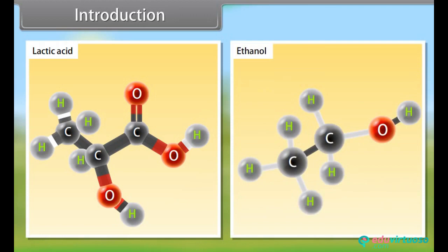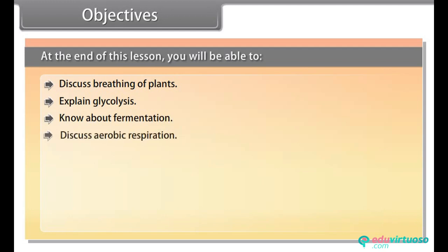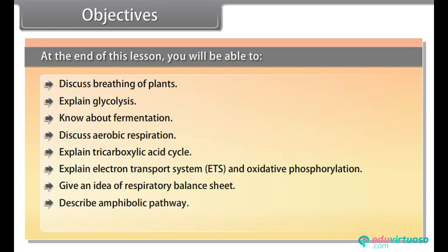Throughout this module, we learn respiration in plants. At the end of this lesson, you will be able to: discuss breathing of plants, explain glycolysis, know about fermentation, discuss aerobic respiration, explain tricarboxylic acid cycle, explain electron transport system (ETS) and oxidative phosphorylation, give an idea of respiratory balance sheet, describe amphibolic pathway, and define respiratory quotient.